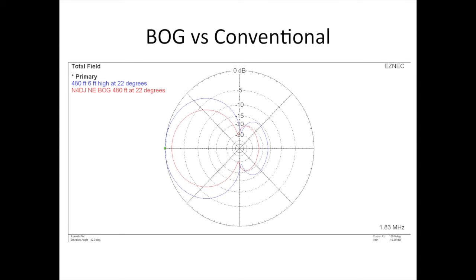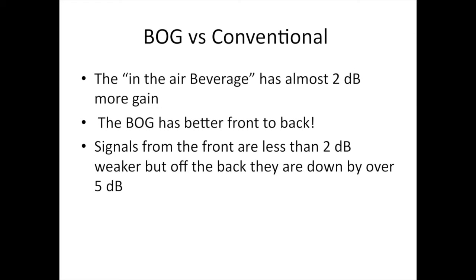Now this is an interesting plot. It's a 480 foot beverage 6 feet high and a bog 480 feet laying on the ground. Now what we notice here is that the in-the-air beverage has almost 2 dB more gain. That's not a whole lot, really. The bog actually has a better front to back ratio. Signals from the front are less than 2 dB weaker, but off the back they are down by over 5 dB.